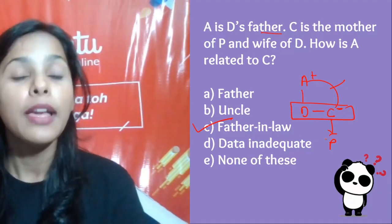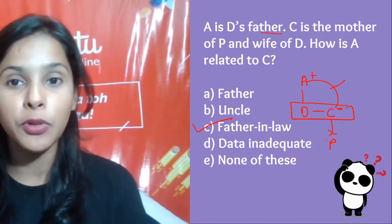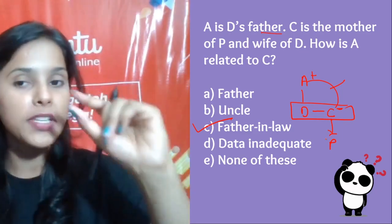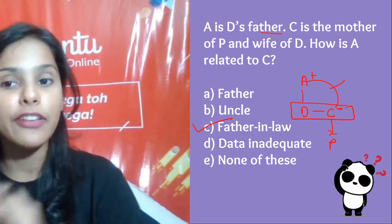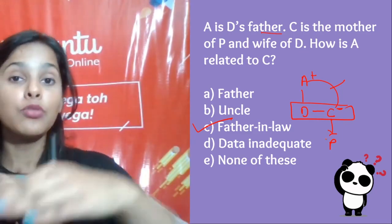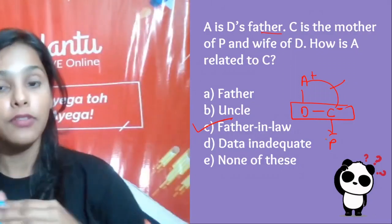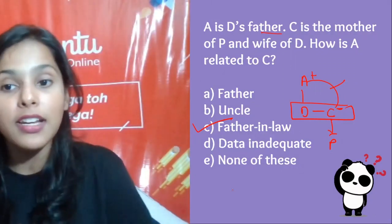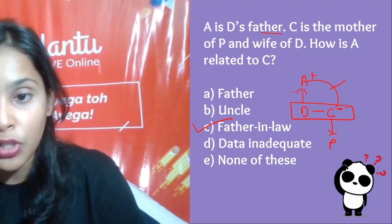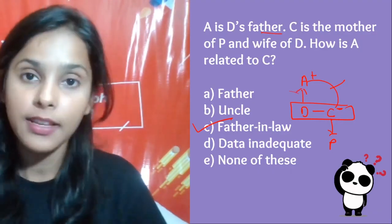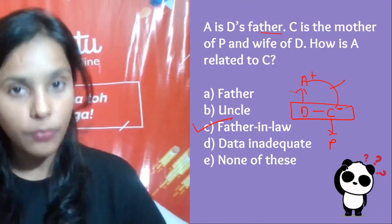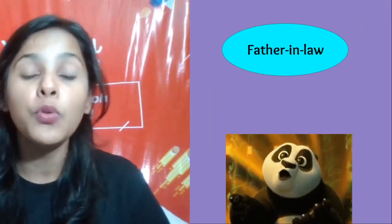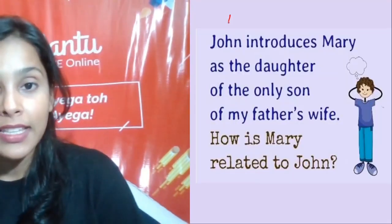To recap: relax, read the question first, then represent it using positive signs for males, negative signs for females, boxes for husband and wife, and hierarchical arrows for generations. That's the method I've shown you. I hope you've got it!